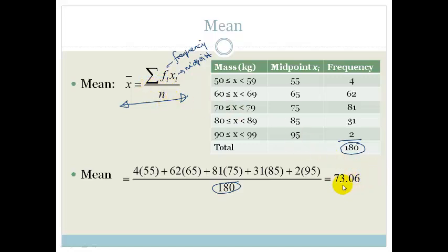And you'll see that the mean of this is 73.06. So what the mean is saying is that according to the mean, the average mass was 73.06 kgs.